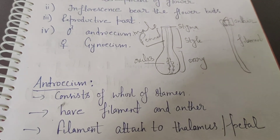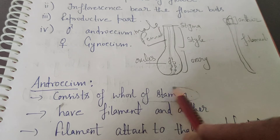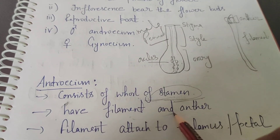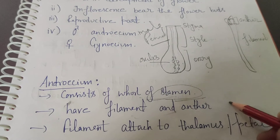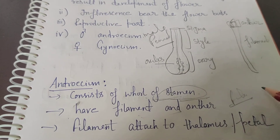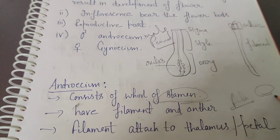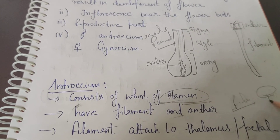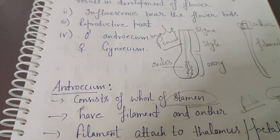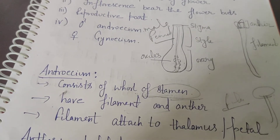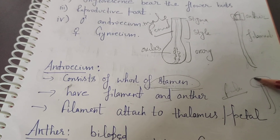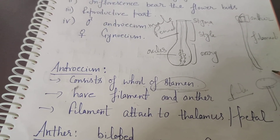The androecium consists of the whorl of stamens. What are the stamen? The stamen has two parts: one is the filament, which is a thread-like structure, and the other is the bilobed structure called the anther. The filament is a long thread-like structure that is either attached to the thalamus or to the petal.